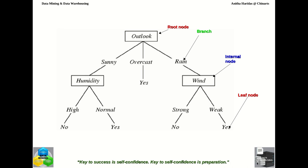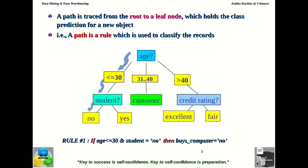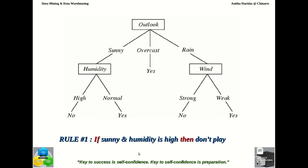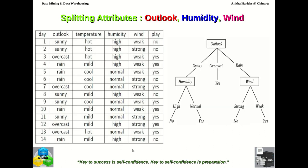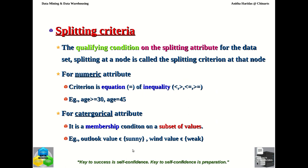Here is another example of a decision tree. We have seen what is a root node, what a branch is, what an internal node is, and what a leaf node is. We also talked about what a path in a decision tree means. The path is used to define a classification rule of the decision tree. Then we saw what a splitting attribute and splitting criteria mean.